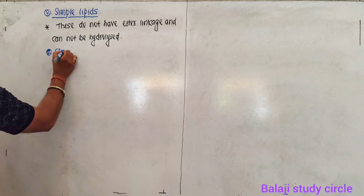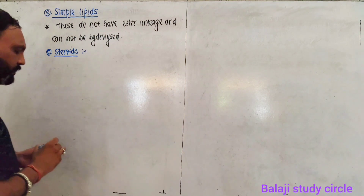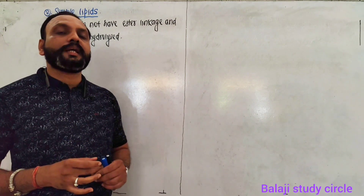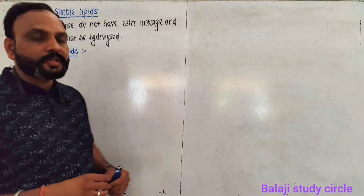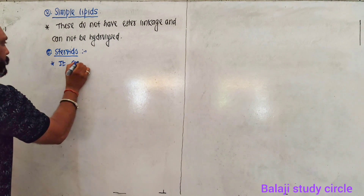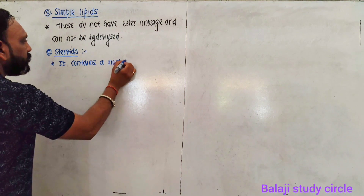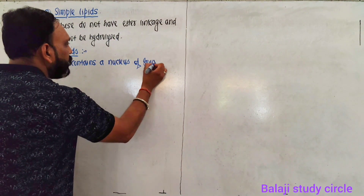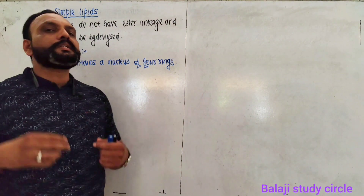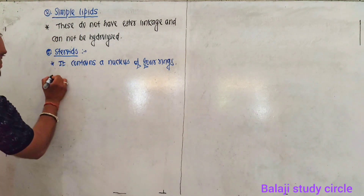Let's discuss steroids first. Steroids have a four-ring nucleus — a nucleus containing four rings. This nucleus is derived from cyclopentanoperhydrophenanthrene.